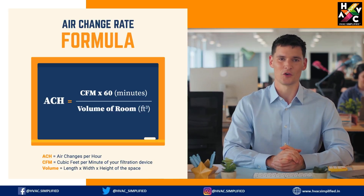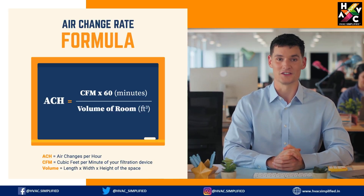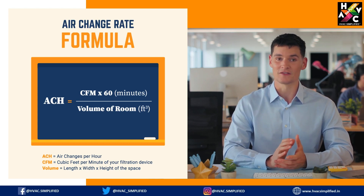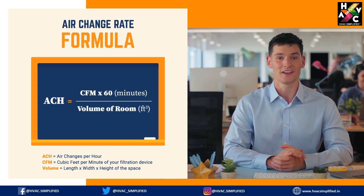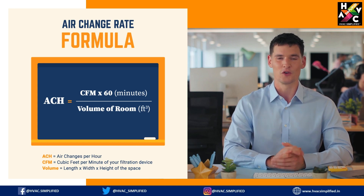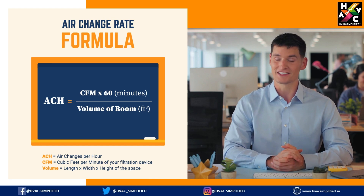Now let's break down the formula for calculating the air changes for a room or space. In this formula, CFM stands for cubic feet per minute, multiplied by 60 minutes, since we are looking for air changes per hour — this represents the flow rate of air. The volume is the total room or space volume that requires ventilation.